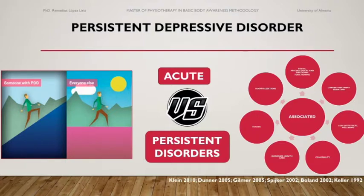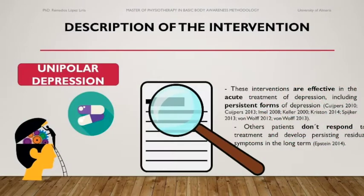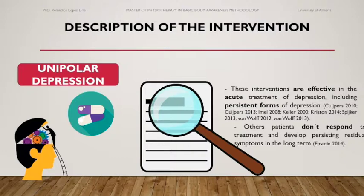Overall, a large number of different interventions exist for the treatment of unipolar depression, including psychological, pharmacological, and combined psychological and pharmacological therapies. Evidence from randomized controlled trials as well as meta-analyses suggests that these interventions are effective in the acute treatment of depression, including persistent forms of depression.